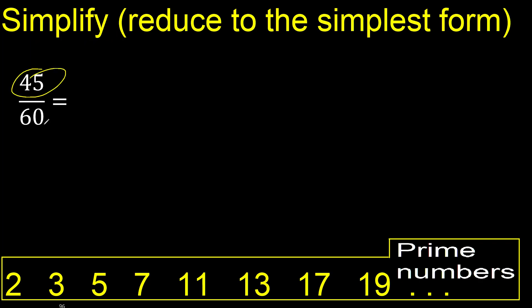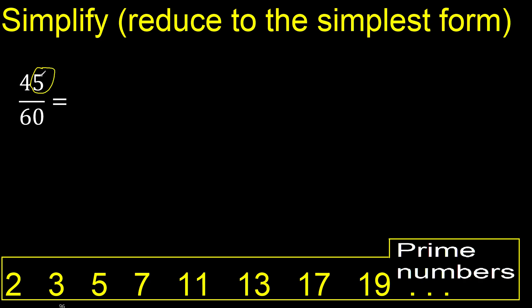45 and 60 cannot be divided by 2 because the last digit is not even, therefore 45 cannot be divided by 2.